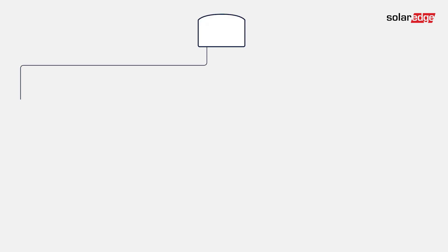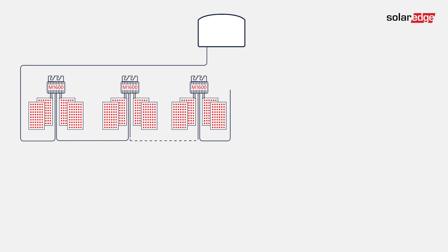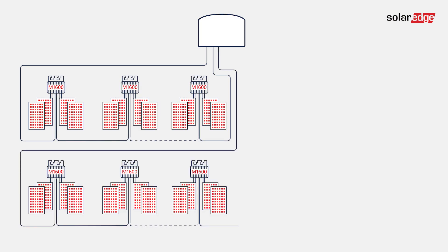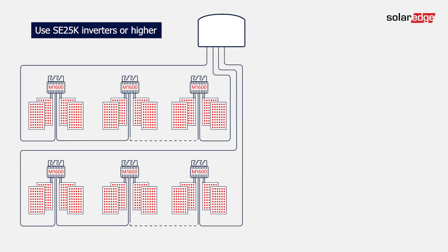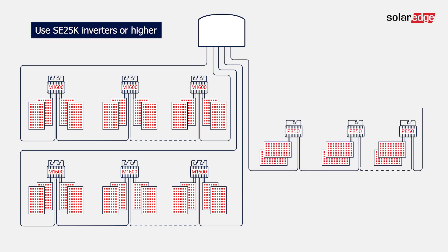Unlike other SolarEdge commercial power optimizers, which can be mixed and matched on the same string, the M1600 can only be installed with other M1600 units in the same string. It is not supported to connect another string which doesn't include any M1600s to the same inverter.